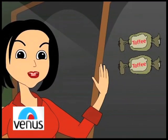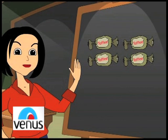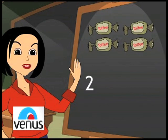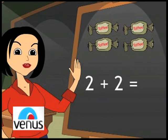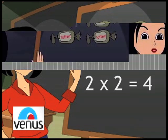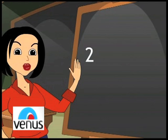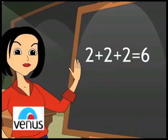For example, two chocolates and two chocolates makes four chocolates, or two times two is four. In the language of tables, this would be two twos are four. Similarly, two plus two plus two would give you six.